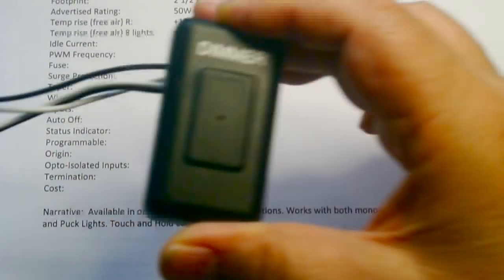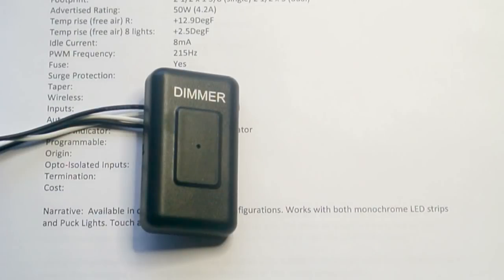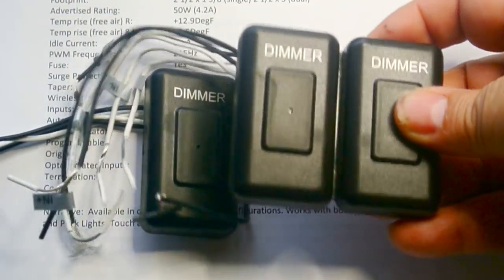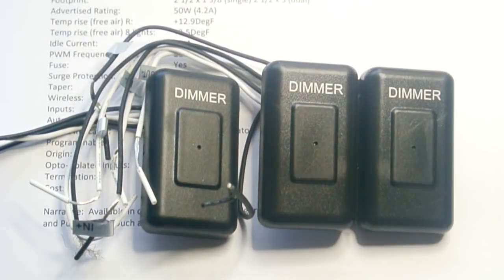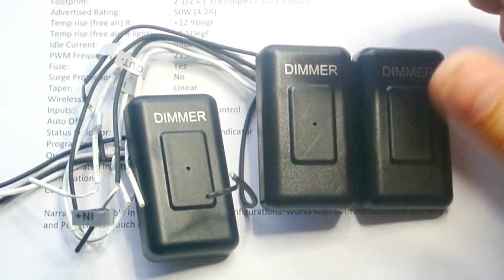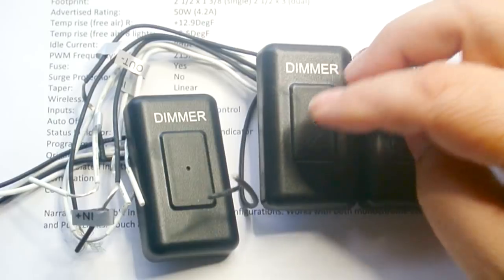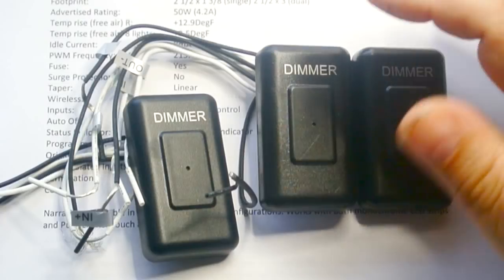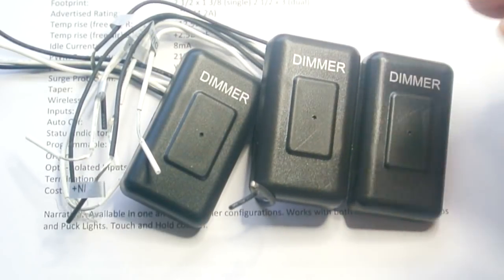And next, we have this FACON 50W dimmer. And it is available in either a single or a double dimmer. It is a high-side configuration. The frequency is 215 Hz. There is no on-off switch, so it draws about 8mA. When you're in idle, this is also fuse protected.